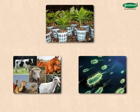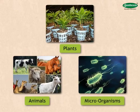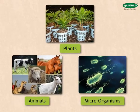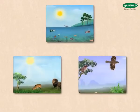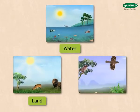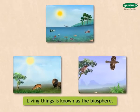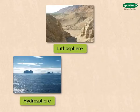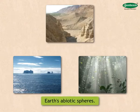We find different types of plants, animals and microorganisms in our surroundings. They are known as living things. We find living things in water, on land and in the air. This envelope of living things is known as the biosphere. The biosphere is a biotic sphere, but the lithosphere, hydrosphere and atmosphere are the earth's abiotic spheres.